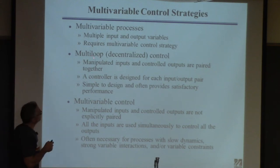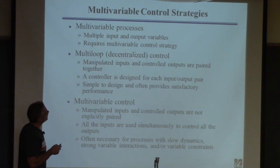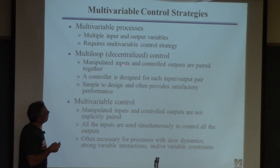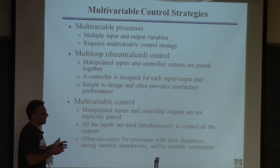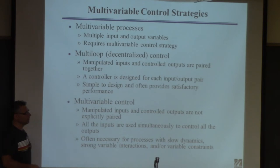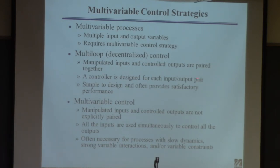That's called multi-loop or sometimes decentralized control. Let's say you have two inputs, U1 and U2, and two outputs called Y1 and Y2. You figure out how to pair the variables together — we'll talk about this — and then you design two controllers, one for each of the two pairs.